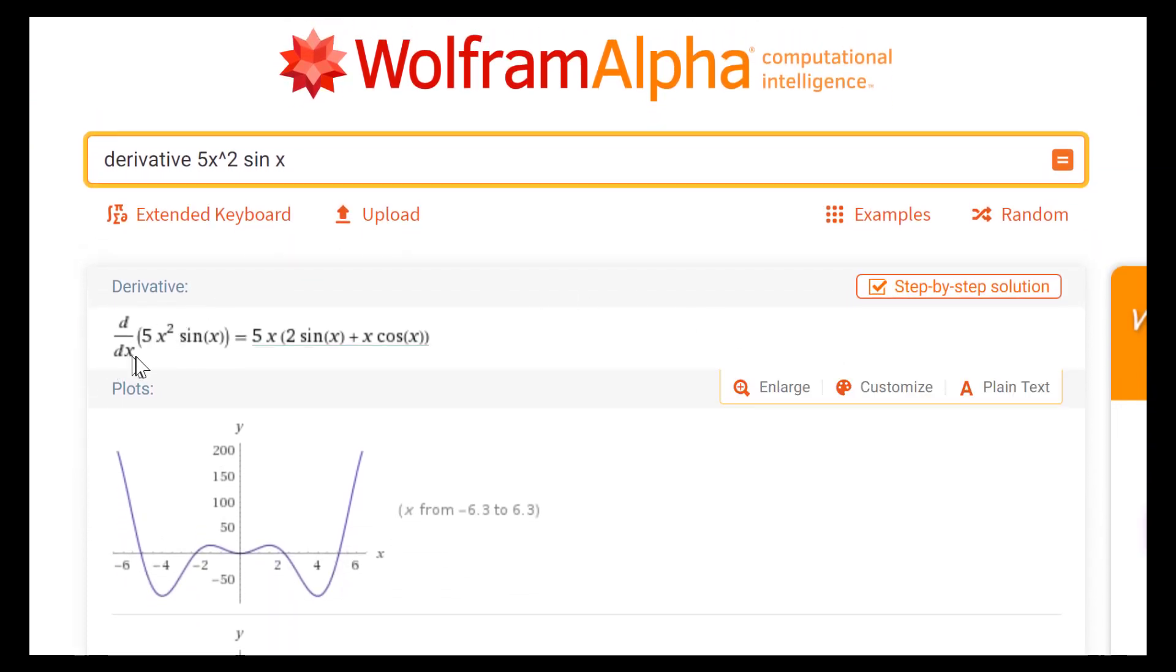d/dx—that's Leibniz notation—the derivative of 5x²·sin(x). The result is 5x times (2·sin(x) + x·cos(x)). That was our GCF that we factored out. Looks great! Notice it also gives you a cool little picture. There you have it, we verified our answer.